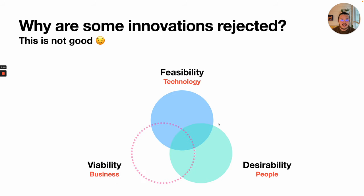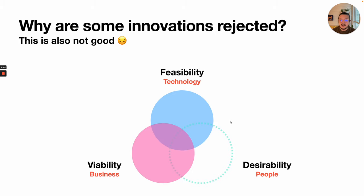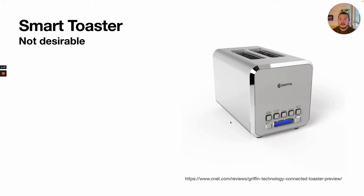So what happens when innovations are rejected? Well, it could be not business viable, or it could be that it's not desired by people. These are two major reasons that innovations don't work — that innovations get rejected by the marketplace and by people.